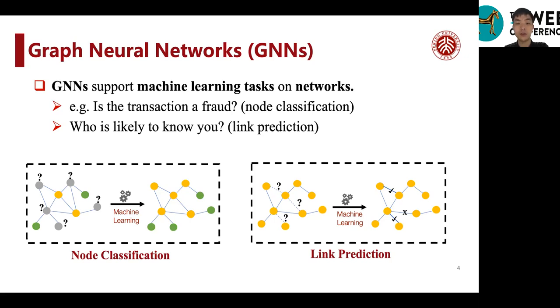And when we carry out the task of predicting friendships on social networks, then we need to carry out link prediction tasks on social networks. Both of them can be enabled by GNNs.